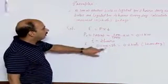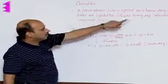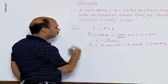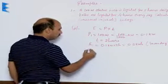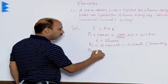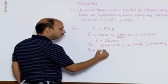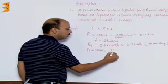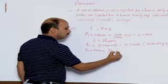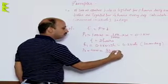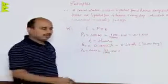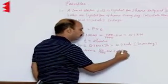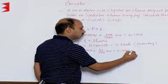Similarly, we calculate for the 40 watt bulbs. We take P2 equal to 40 watt, that is equal to 40 divided by 1000 kilowatt, which equals 0.04 kilowatt. This is the power of the 40 watt bulb in kilowatt.